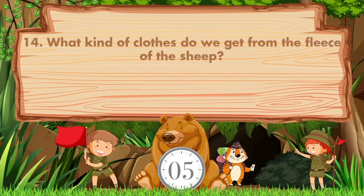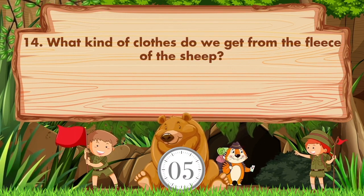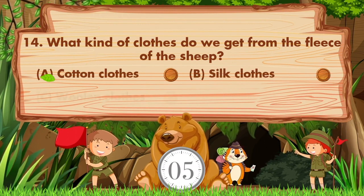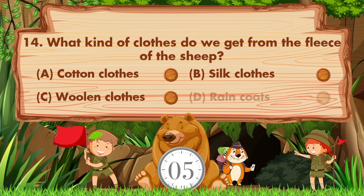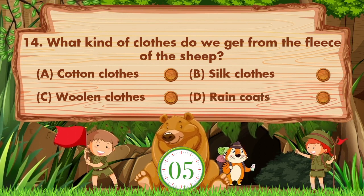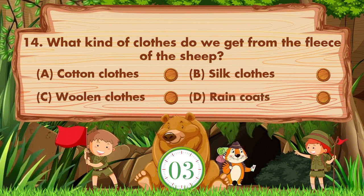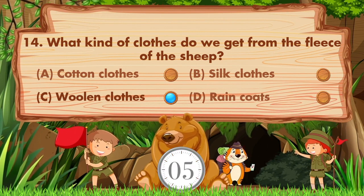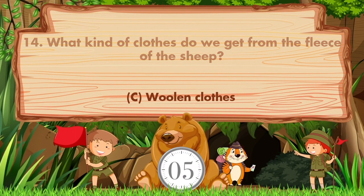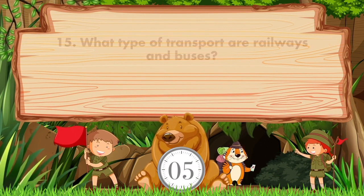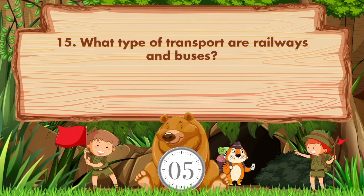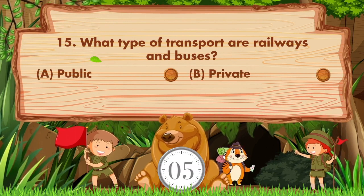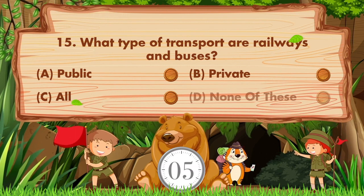What kind of clothes do we get from the fleece of the sheep? Option A cotton clothes, B silk clothes, C woolen clothes, D raincoats. What type of transport are railways and buses? Option A public, B private, C all, D none of these.